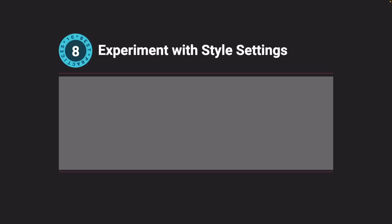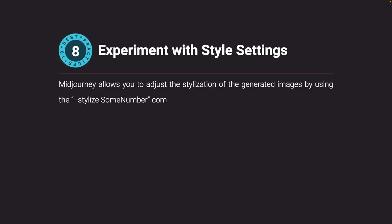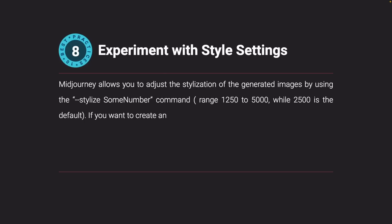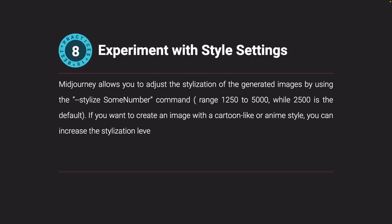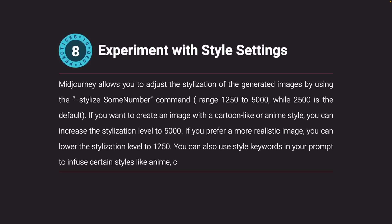Experiment with style settings. Midjourney allows you to adjust the stylization of generated images using the stylize command with a range of 1250 to 5000, with 2500 as the default. To create a cartoon-like or anime style, increase the stylization level to 5000. For a more realistic image, lower it to 1250. You can also use style keywords like anime, cyberpunk, or steampunk in your prompt.